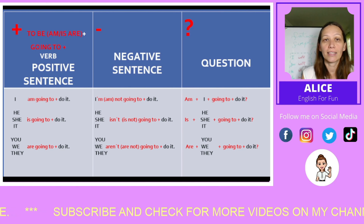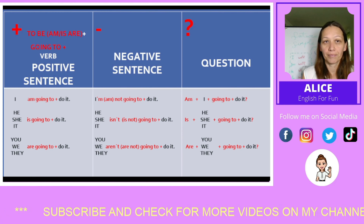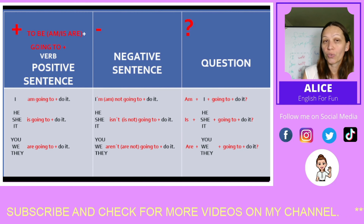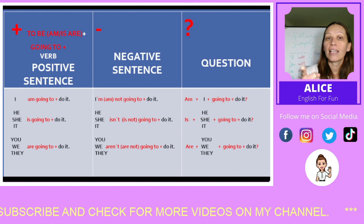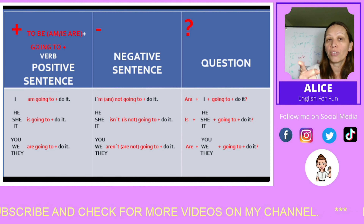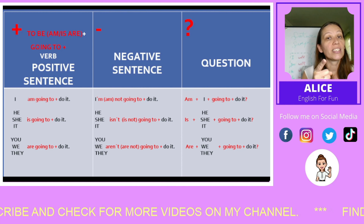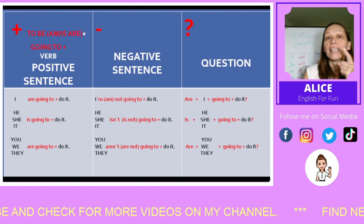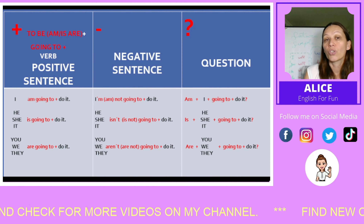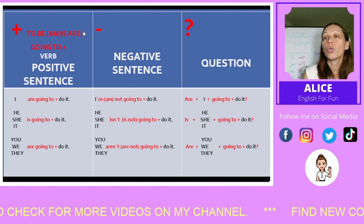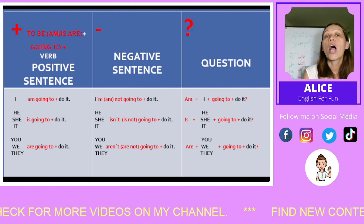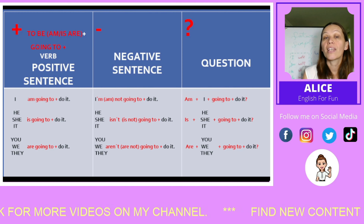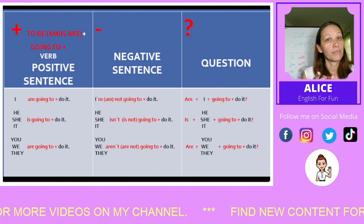Positive sentences: I am going to do it. He is going to do it. She is going to do it. It's going to do it. You are going to do it. We are going to do it. And they are going to do it.